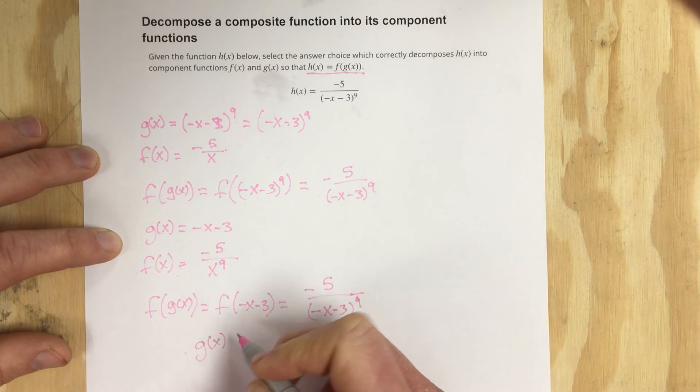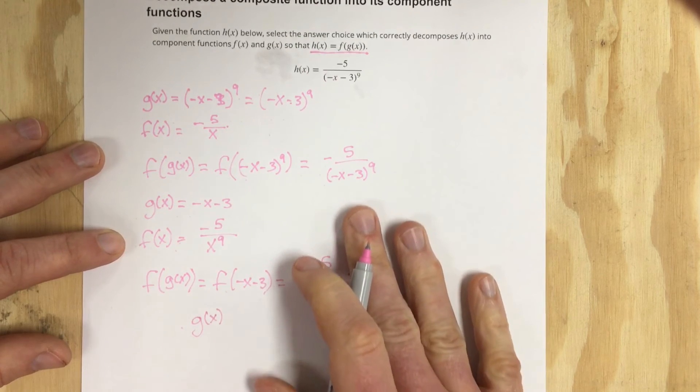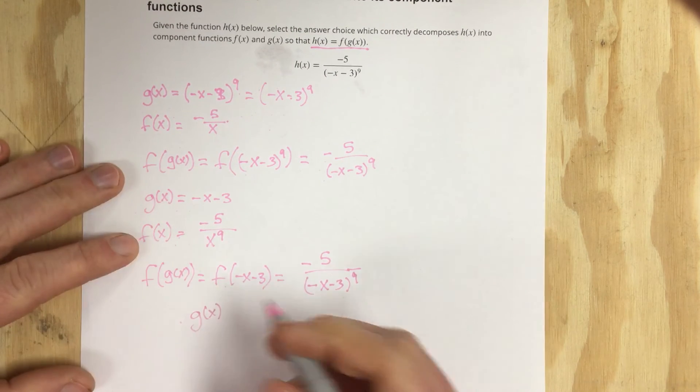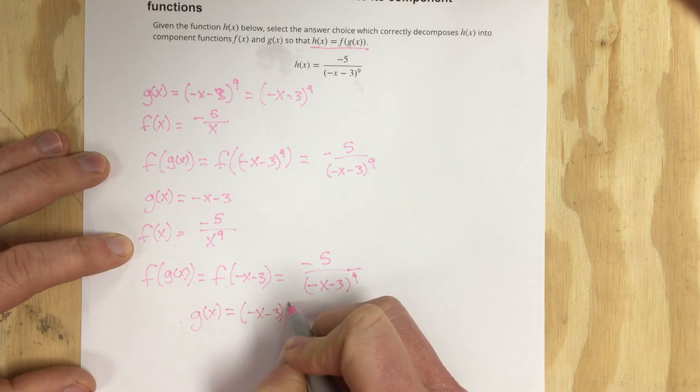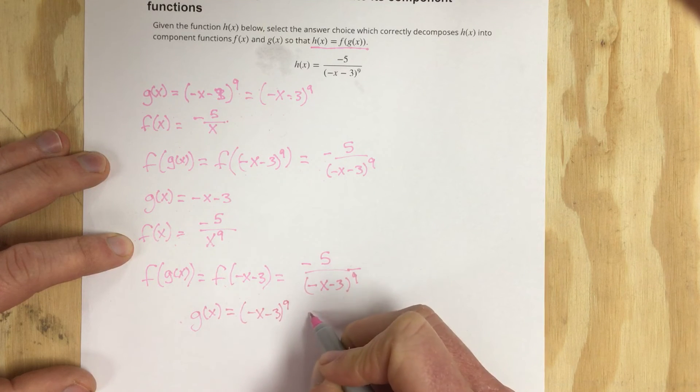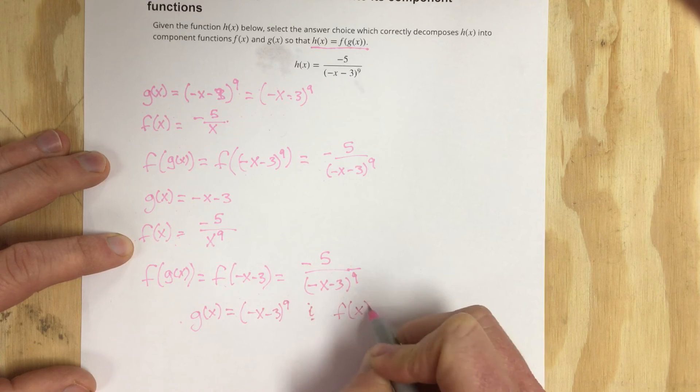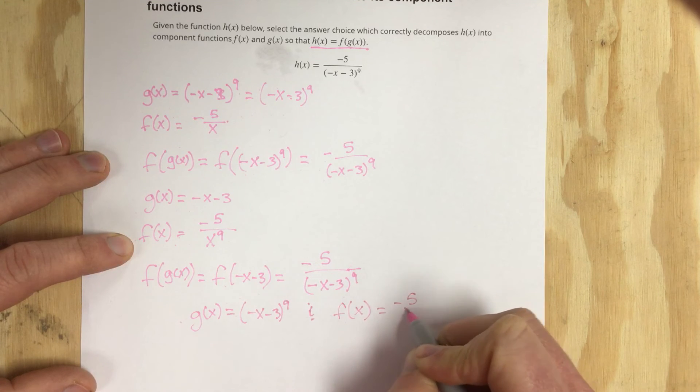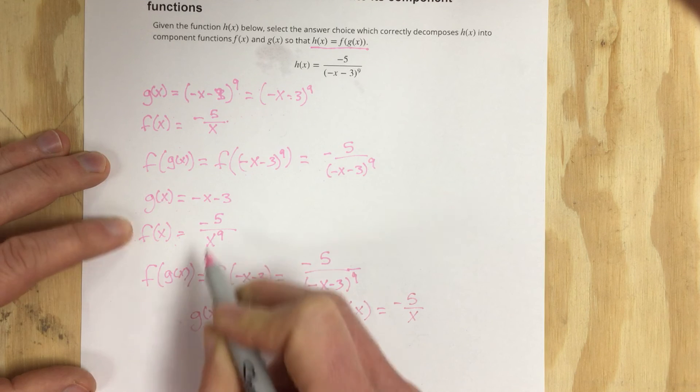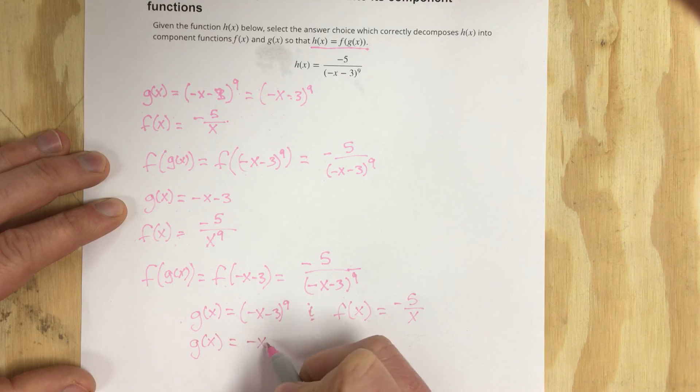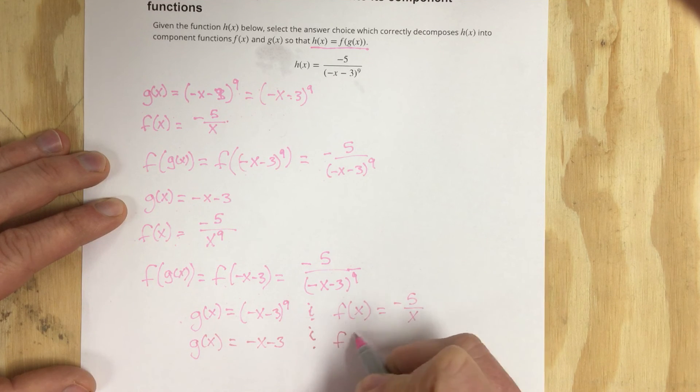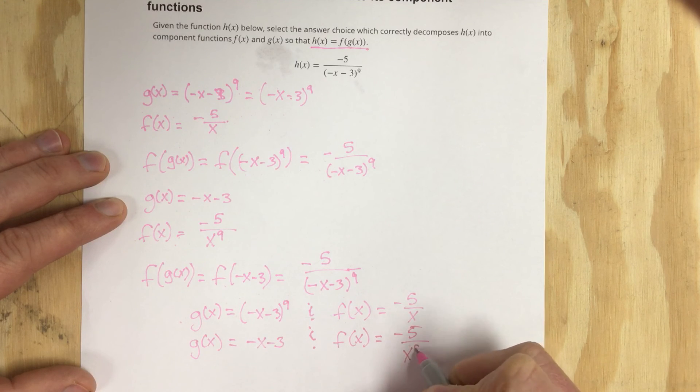So really my two options here are g of x equaling negative x minus 3 to the 9th and f of x equaling negative 5 over x, and then also g of x equaling negative x minus 3 and f of x equaling negative 5 over x to the 9th.